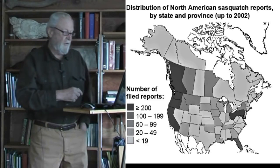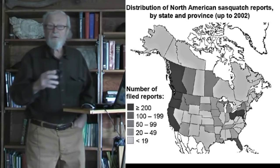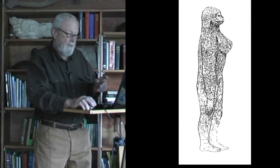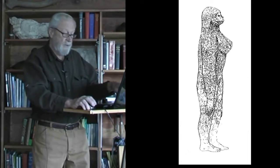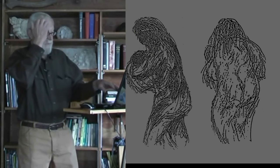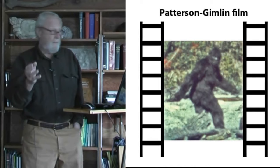Not all Sasquatches appear to be these great, hulking, wide-shouldered males. Some have been described as females, either on the basis of visible breasts — such as this one — or because they appeared to be carrying an infant. The controversial Patterson-Gimlin film — in good copies, you can see that it appears to be a female with visible breasts.